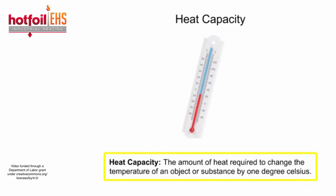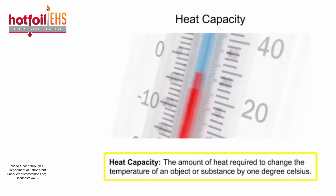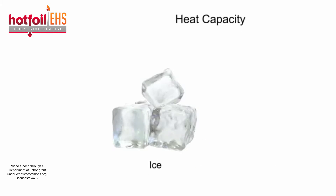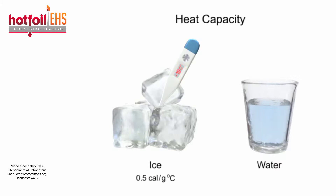Heat capacity is the amount of heat required to change the temperature of an object or substance by 1 degree Celsius. The heat capacity of water varies depending on its phase. As solid ice, the heat capacity of water is 0.5 calories per gram for every 1 degree Celsius, which means it takes half a calorie to raise the temperature of 1 gram of ice 1 degree Celsius. As a liquid, water's heat capacity is 1 calorie per gram for every 1 degree Celsius, so it takes 1 calorie of heat energy to raise 1 gram of water 1 degree Celsius.